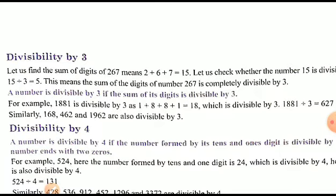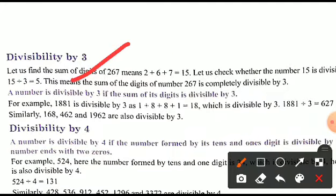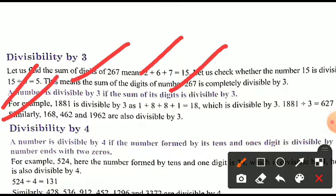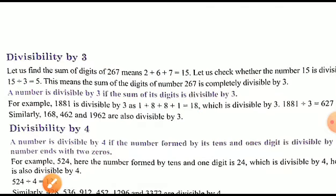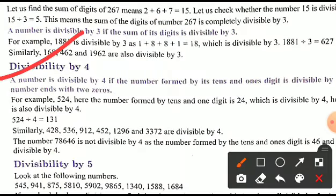Divisibility by 3: a number is divisible by 3 if the sum of its digits is divisible by 3. For example, 267 — the sum of digits is 2 + 6 + 7 = 15, and 15 is divisible by 3. Another example: 1881 — sum of digits is 1 + 8 + 8 + 1 = 18, which is divisible by 3, so 1881 is divisible by 3.